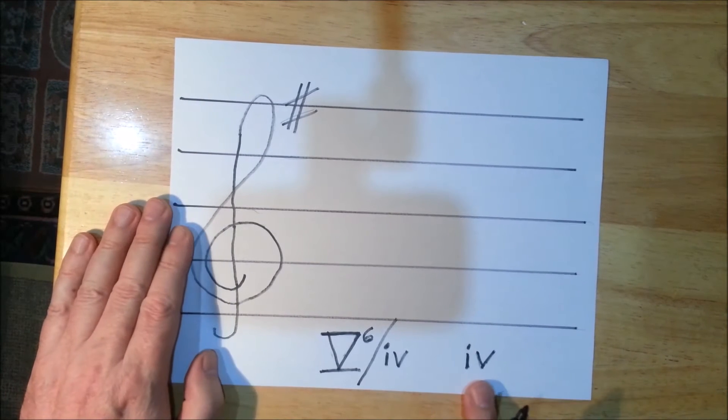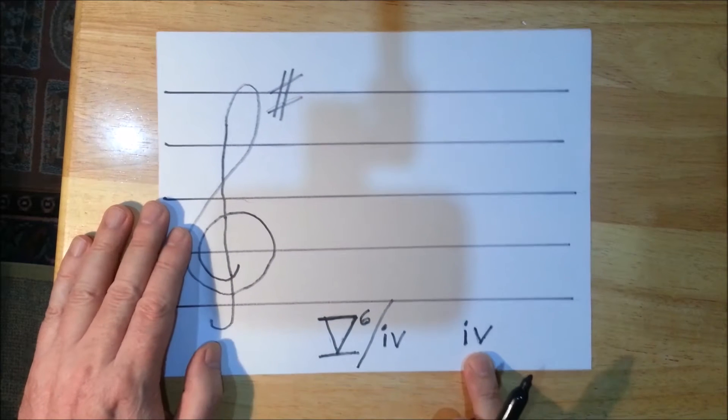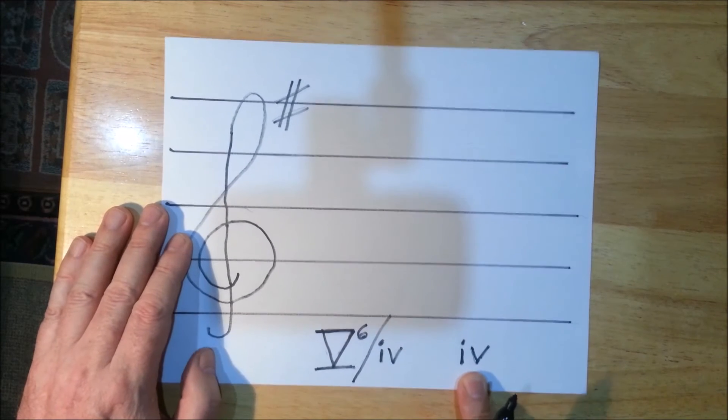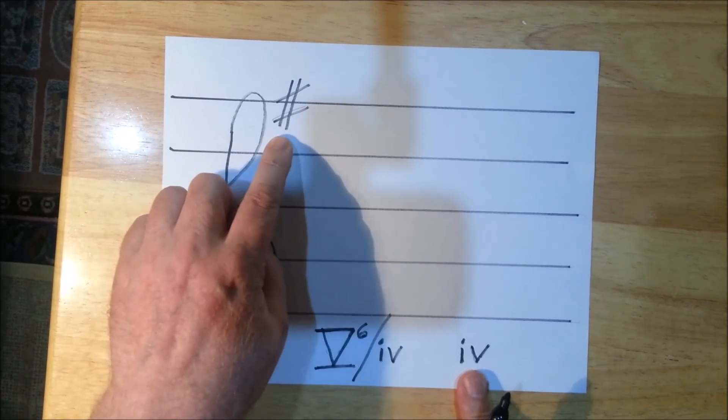Now I look down here and I see there's a four chord. The four chord in this example is minor. Only in a minor key is the four chord minor. Therefore the key must be E minor.